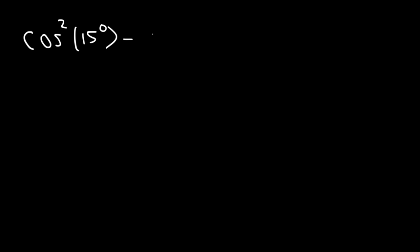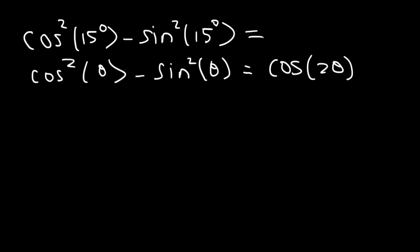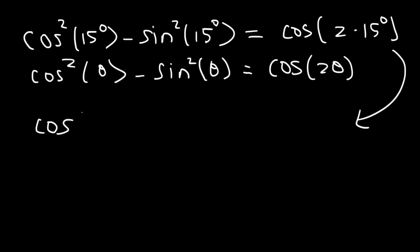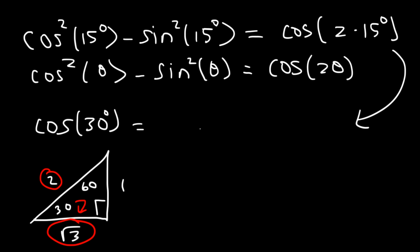Let's work on a similar problem: cosine² 15° − sine² 15°. Using the double angle formula, cosine² θ − sine² θ = cosine 2θ. So cosine² 15° − sine² 15° = cosine(2 × 15°) = cosine 30°. By the 30-60-90 triangle, cosine 30° = √3/2, since √3 is adjacent to the 30° angle and 2 is the hypotenuse.